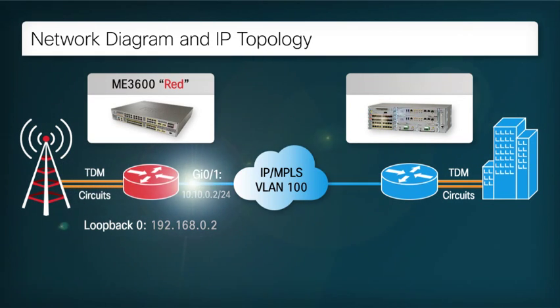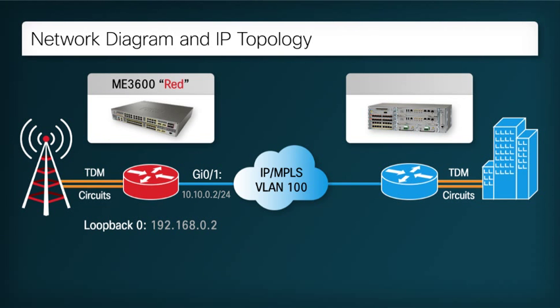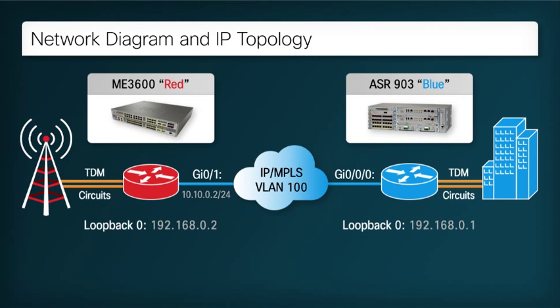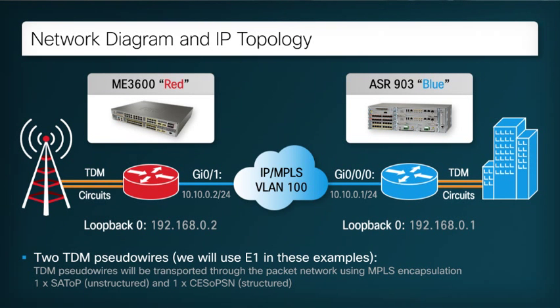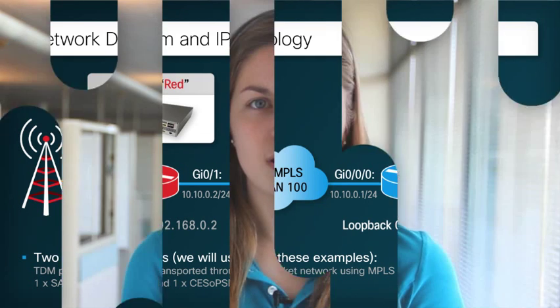The ASR903 is deployed at the centralized POP, as indicated by the building icon. It is also connected to the equipment using two separate TDM circuits — the terminating end of the same two circuits originating in the remote site. This node will be known by the hostname BLUE and have a loopback address of 192.168.0.1. The first port on the gigabit Ethernet interface module, gigabit Ethernet 0/0/0, has been connected to the backhaul network with an IP address of 10.10.0.1/24. For this solution, the customer TDM equipment supports ITU E1 circuits. If your market requires T1, know that T1 configurations are very similar and any major differences will be highlighted as we proceed.